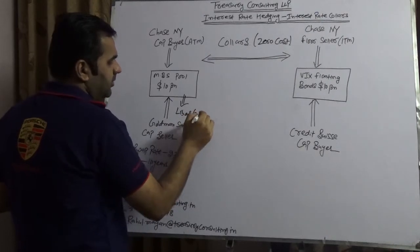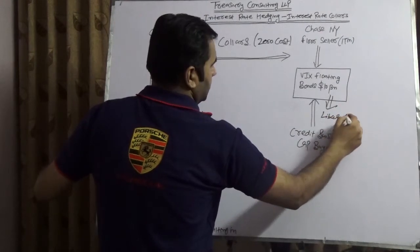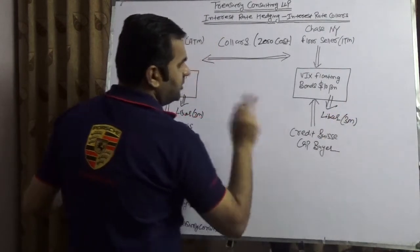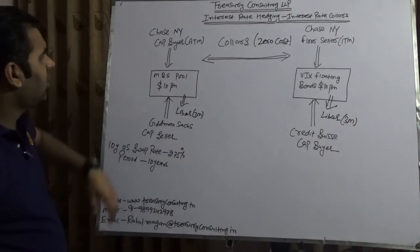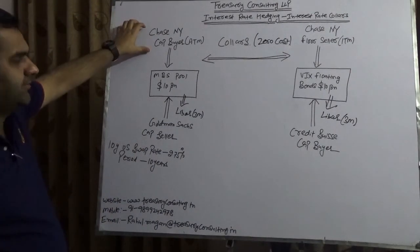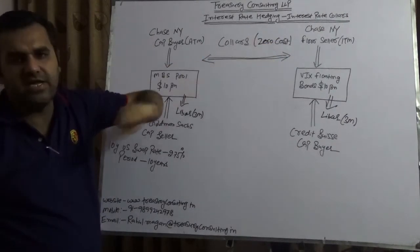And that underlying is known as three months LIBOR. So both are floating. So what Chase is doing, Chase is creating a collar. In this collar one side they turn out to be a buyer of a cap. One side they turn out to be the seller of a floor.